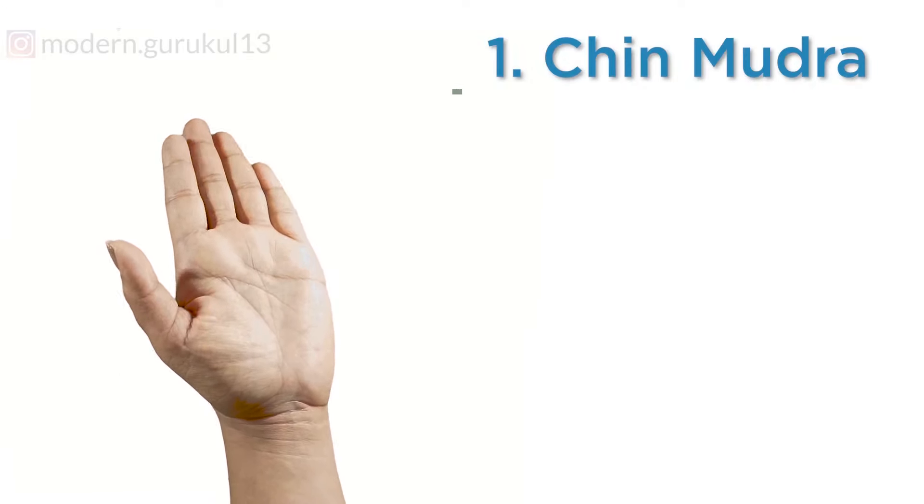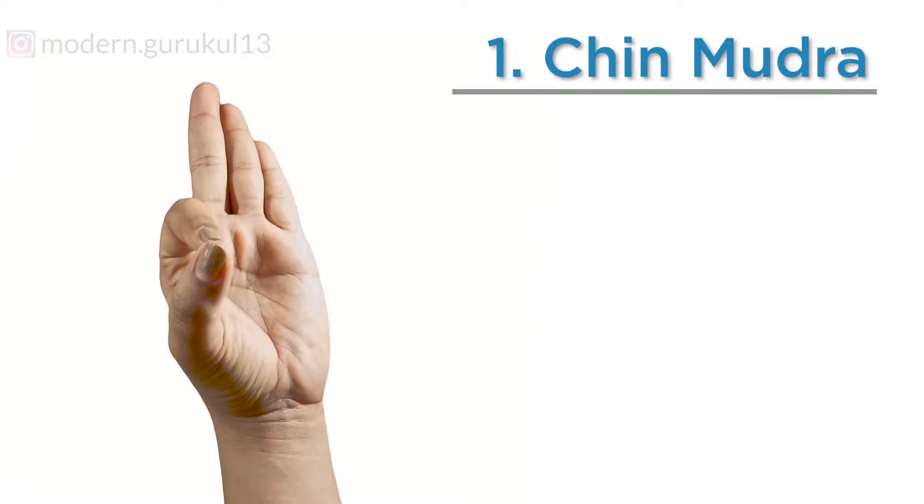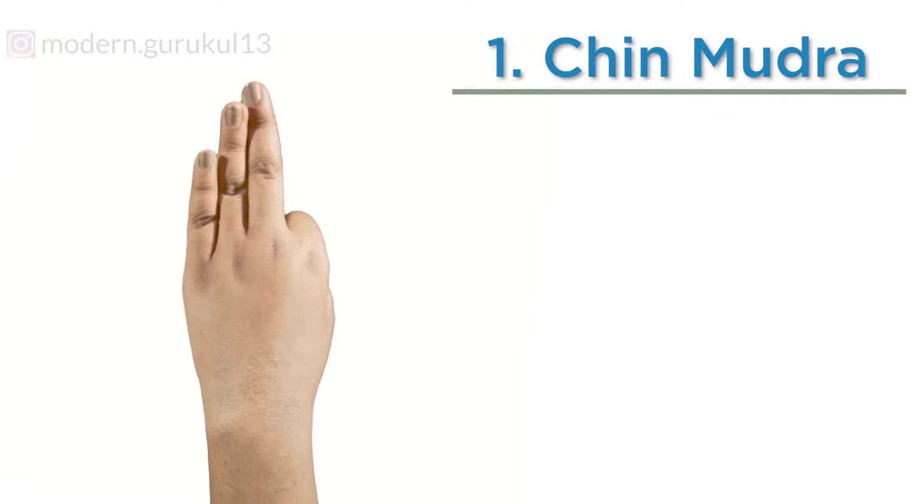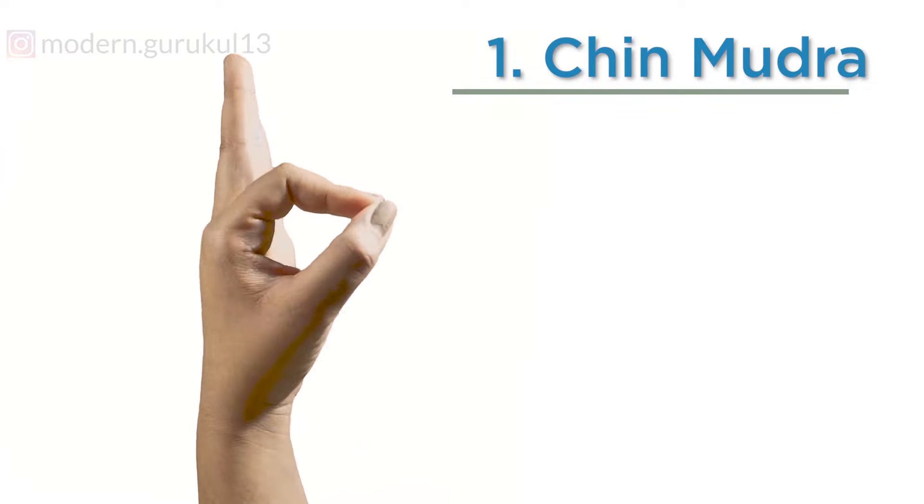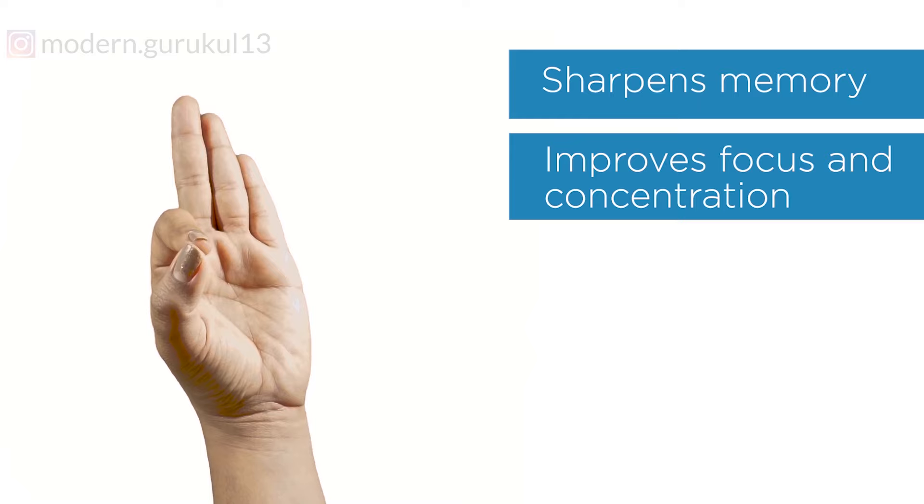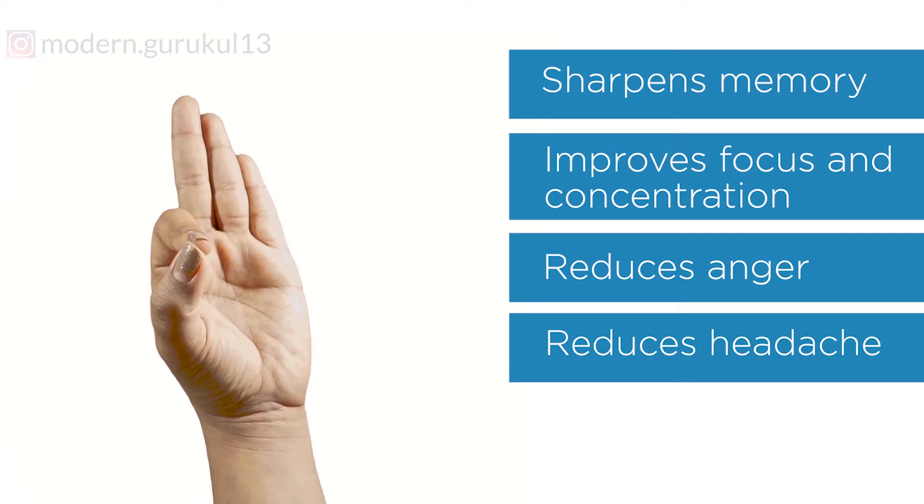Chin Mudra: The tip of the thumb touches the tip of the index finger and other three fingers are pointing outwards. Chin Mudra sharpens our memory, improves focus and concentration, reduces anger, and it also reduces headache.